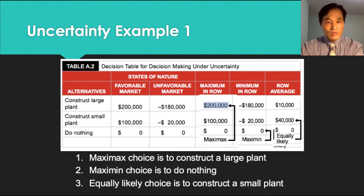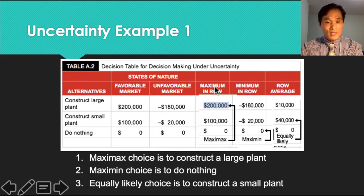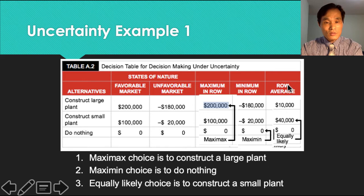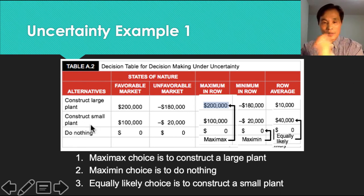To reiterate: the MaxMax choice is to construct a large plant, because that produces the largest value. MaxMin, the pessimistic or conservative view, is to do nothing, because that is the maximum of the minimum values it creates. The row average, or Laplace alternative, produces $40,000 and chooses constructing a small plant as the recommendation.